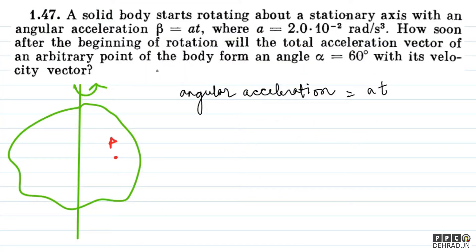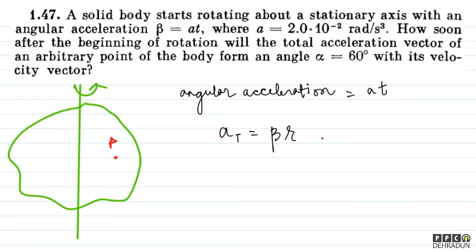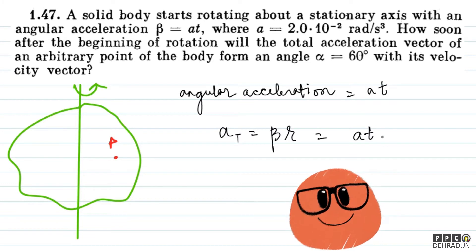This body has angular acceleration with value at — it means the angular acceleration is time dependent. Due to this angular acceleration, the tangential acceleration will be a_tangential = β × R, where R is the radial distance to point P. So I am going to take tangential acceleration as β·R.